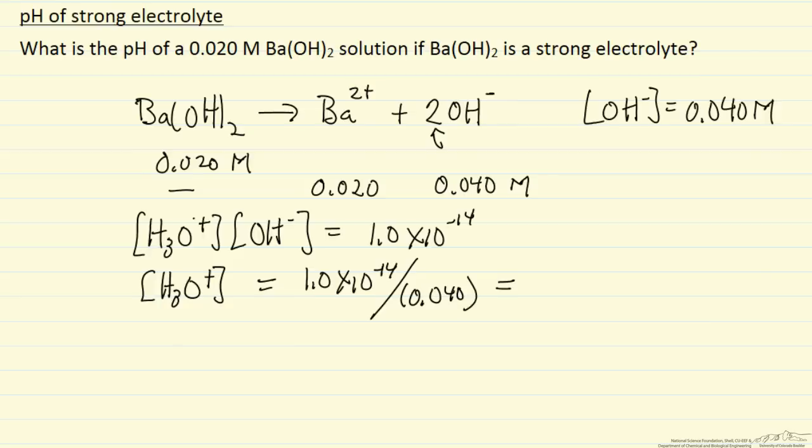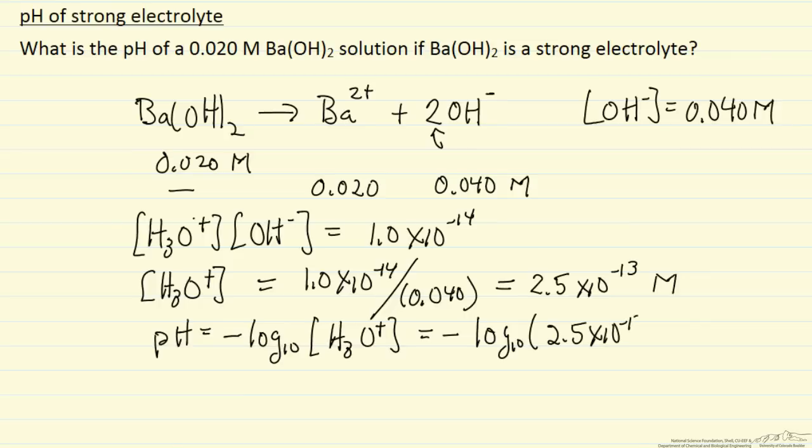This is equal to 2.5 times 10 to the minus 13. Now we can calculate the pH, which is defined as the negative log base 10 of H3O+ concentration in molar units. So that's minus the log of 2.5 times 10 to the minus 13. That's minus minus 12.6, so that says the pH is 12.6.